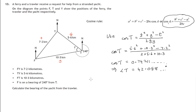So, the question was calculate the bearing of the yacht from the trawler. There's the north direction. 240 degrees plus this angle. So, the required bearing is 240 degrees plus 42.088 and so on.